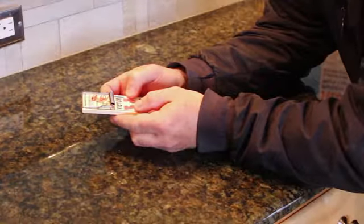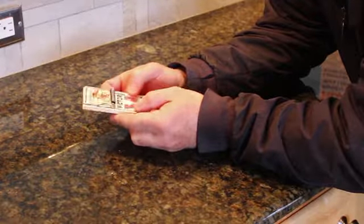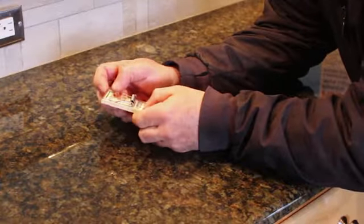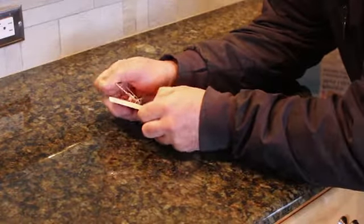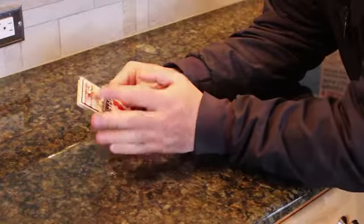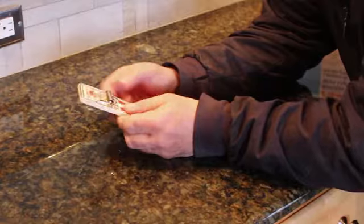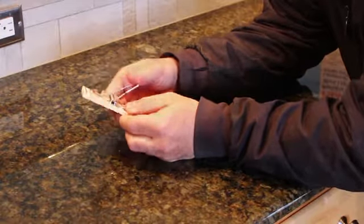So the first step with a mouse trap is to pull the spring-loaded trap part back. Again, I'm keeping my hands back from the front here so I don't get snapped. If I accidentally let go of this, it will snap. So we pull this back, hold it down with our thumb.